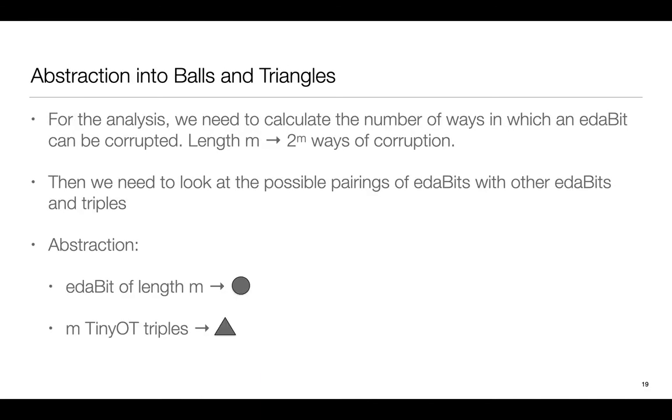Before we go into the intuition for calculating probabilities, let's abstract away EDABITS and TRIPLES. The real-world protocol is very hard to analyze because, to do the full analysis, we also have to consider the number of different ways in which an EDABIT of length m can be corrupted, which is 2 to the m. We need to do the same for TinyOT triples, as well as look at the possible types of pairings between the corrupted EDABITS and corrupted TRIPLES. Instead, we abstract EDABITS and TRIPLES away, replacing them with balls and triangles, while giving the adversary a better chance at winning the game. A ball is one EDABIT of length m, and a triangle is the required number of TinyOT triples for the check, in this case m. We assume that the error in a corrupted ball is always cancelled out by the error in a corrupted triangle or a ball. In the paper, we show that security against adversaries in the ball and triangle game implies security in the actual protocol.